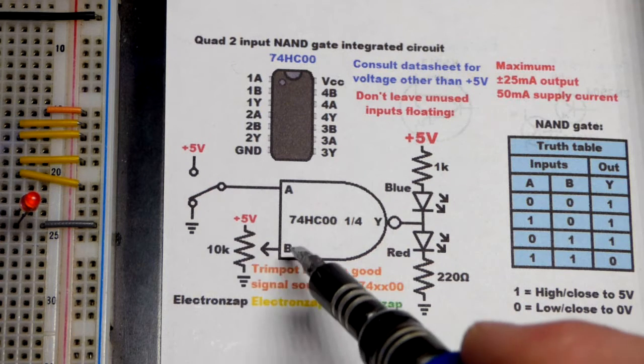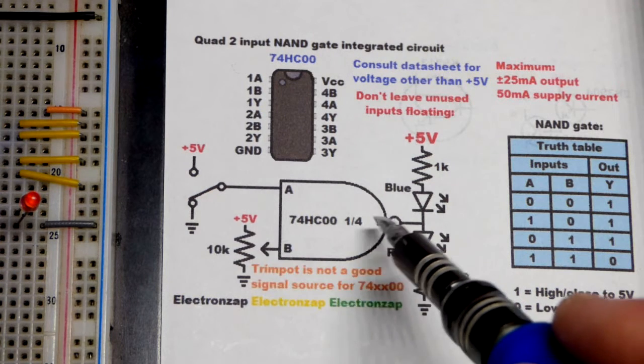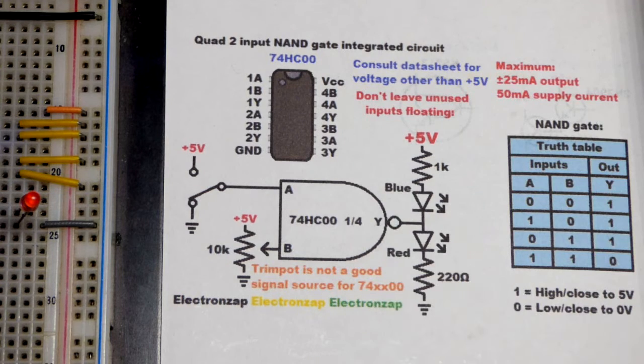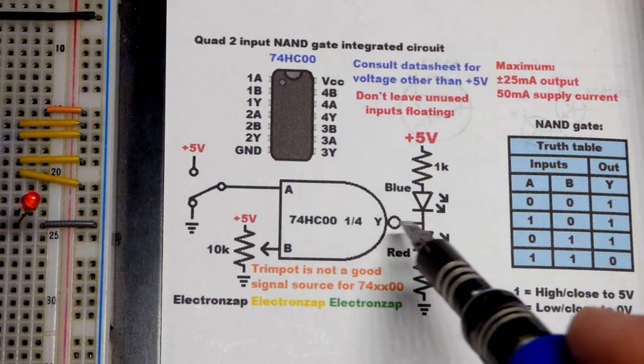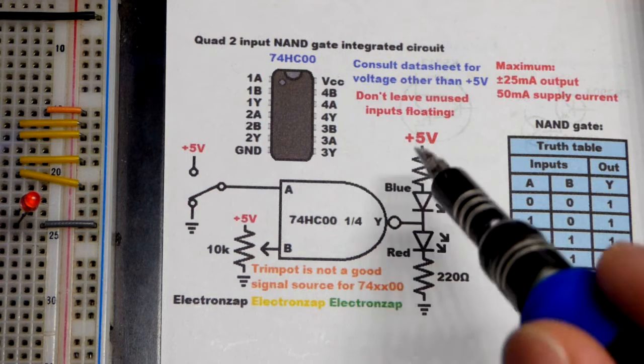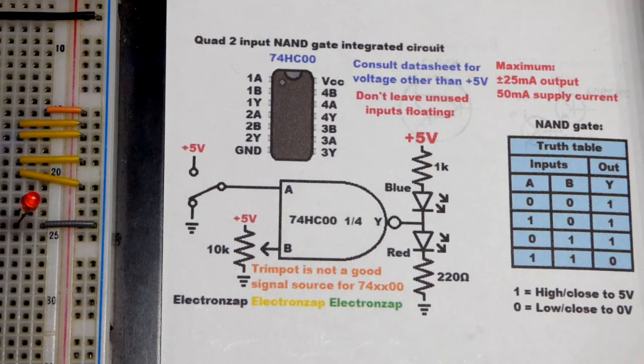As we saw before, a trim pot wasn't a great input. If we get halfway, then the output alternates between high and low. When it was low, the blue LED lit up. When the output was high, the red LED lit up.